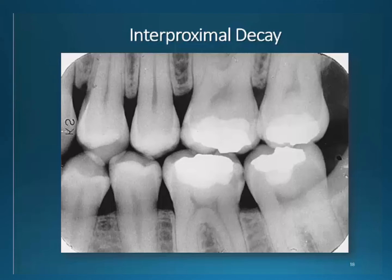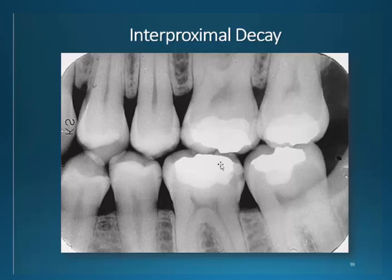I'd like to go back and look at tooth 19 again. The decay may not be classified as recurring because it is starting in a new location on the tooth. If this decay was occurring on the occlusal surface or underneath the existing filling, it could be classified as recurring.